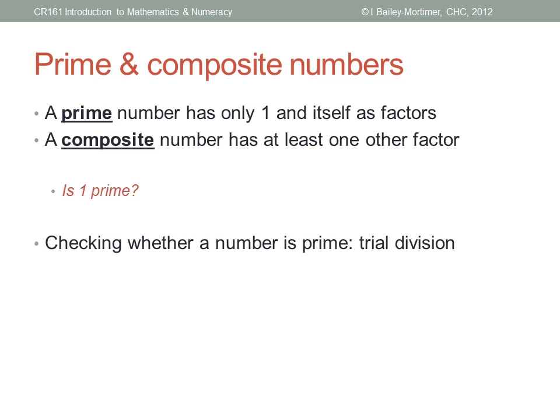So how do we find out whether a number is prime? Well, the simplest way is called trial division. Just try dividing it by every possible factor. Does two go into it? No. Three? No. Do I have to try four? I'll let you think about that.